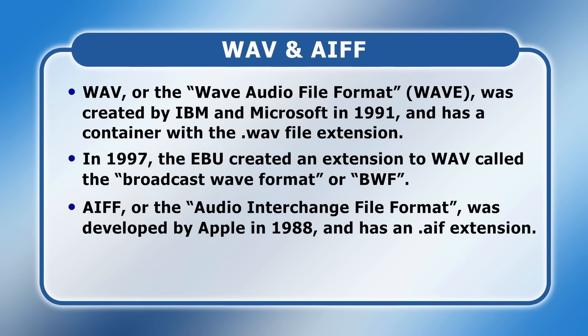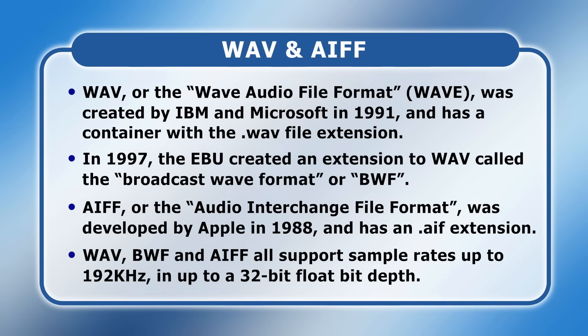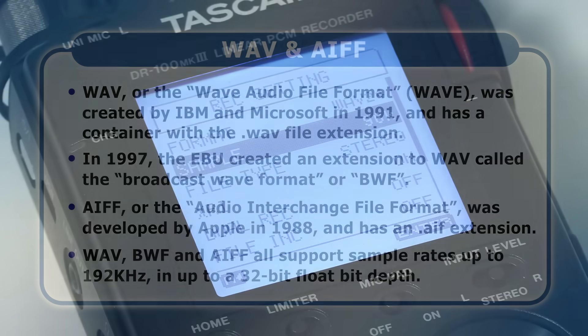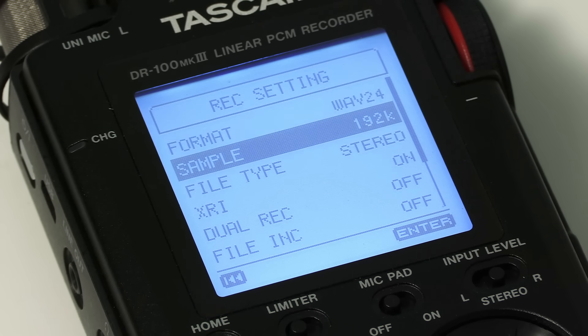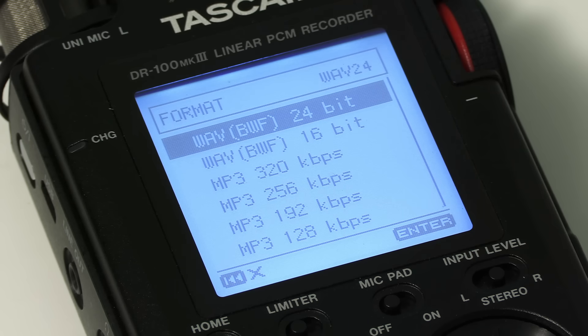AIFF, or the Audio Interchange File Format, was developed by Apple in 1988 and has a container with the AIF file extension, and as you may imagine it's most popular in the Apple universe. WAV, BWF and AIFF all support sample rates up to 192 kHz in up to a 32-bit float bit depth. However, not all applications and recording devices can handle the maximum specifications — for example, whilst the Tascam recorder being used here can record 192 kHz WAV files, the depth is limited to 24-bit.